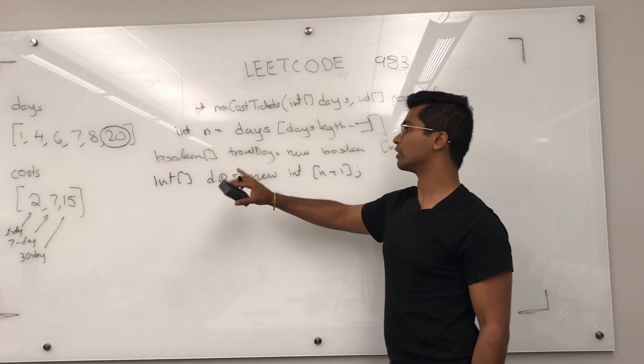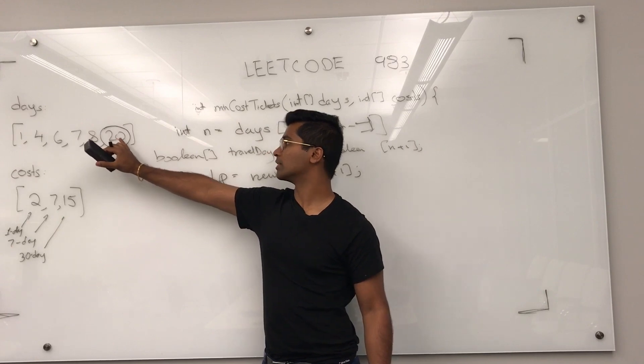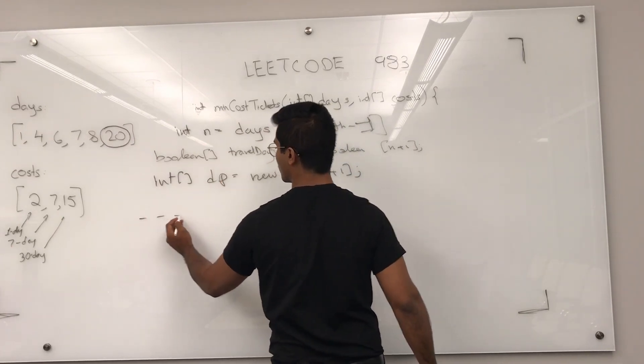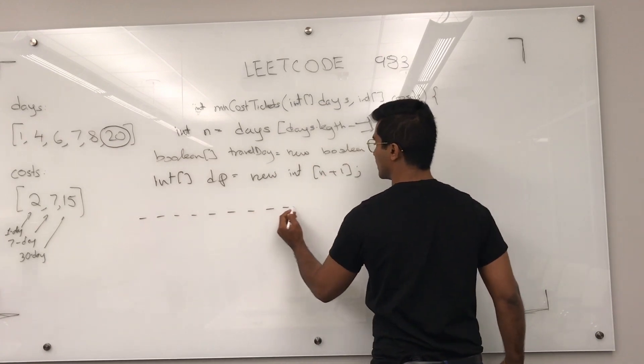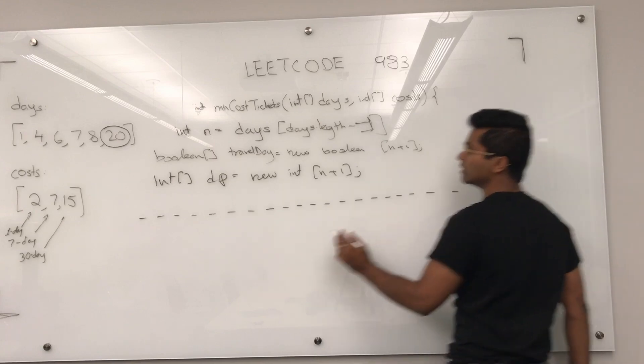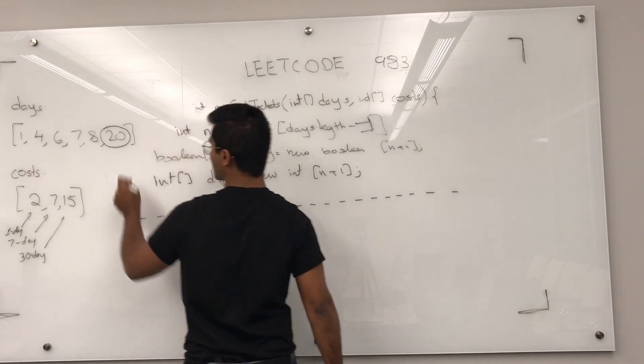And our travel day is going to look like the size of the largest day that we have to travel. So in this case, it's 20. It's going to look like 1, 2, 3, 4, 6, 7, 8, 9, 10 all the way up to 20. And every day that we have to travel, I'm going to put true.